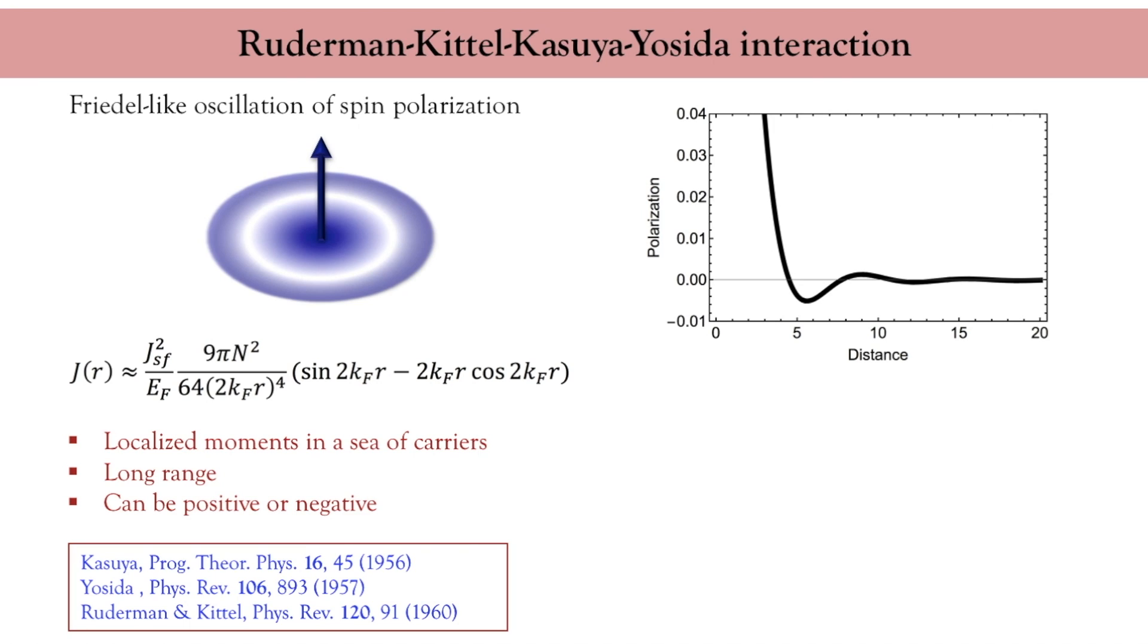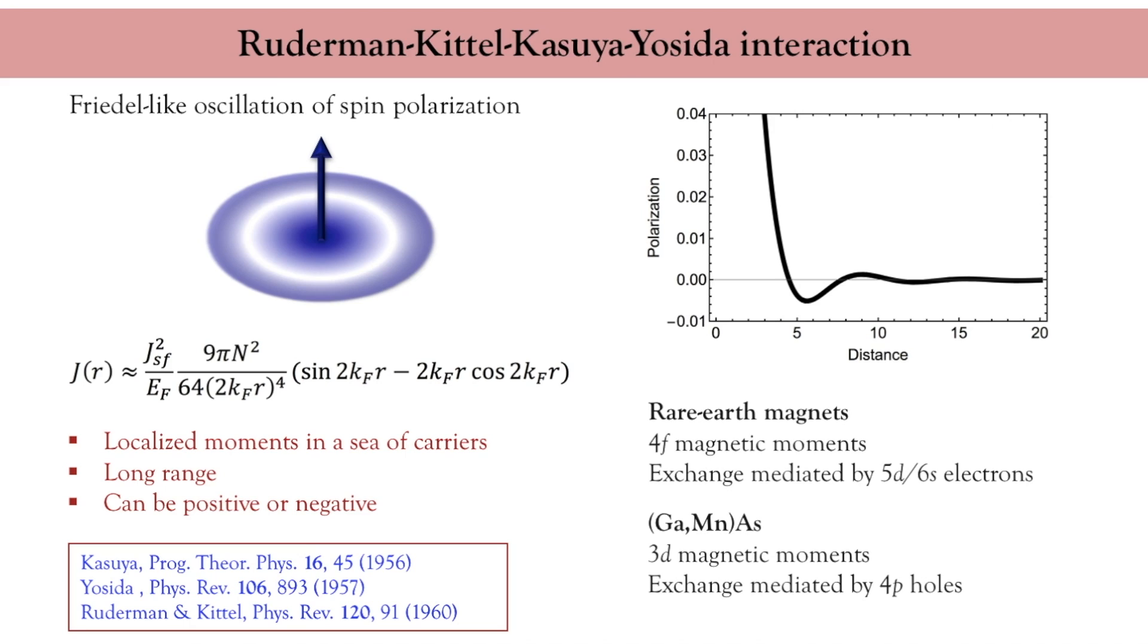So if two neighboring impurities are close to each other, they will align ferromagnetically. If they are a bit further apart, their coupling ends up being weak and anti-ferromagnetic. Even further away, the coupling becomes even weaker and ferromagnetic. And so on and so forth. This mechanism was proposed by Ruderman, Kittel, Yosida and Kasuya and is referred to as the RKKY coupling. It explains the magnetic ordering in alloys composed of localized magnetic moments embedded in a sea of itinerant electrons, such as rare earth alloys and diluted magnetic semiconductors.